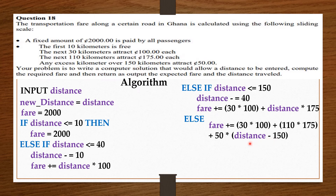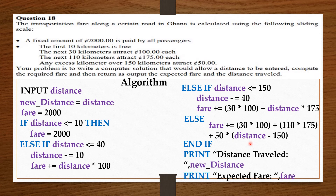Now we end our if statements and print our results. You can see that we printed new_distance and not distance. This is because at the end of the if statement the value of distance is going to change — that is why we initially stored a copy of it in new_distance.